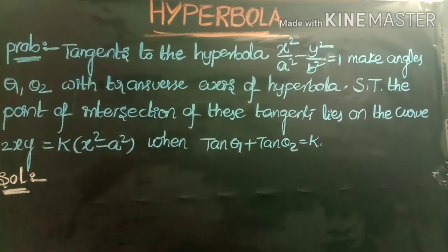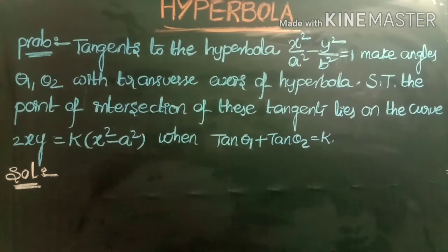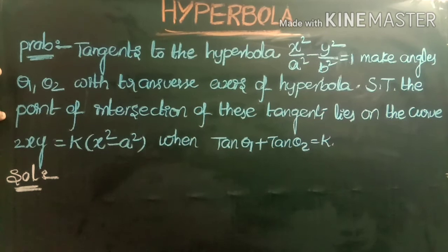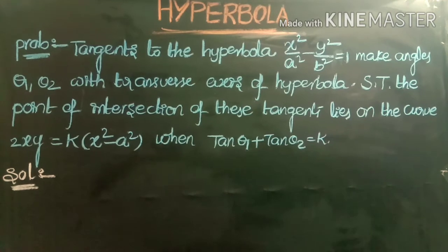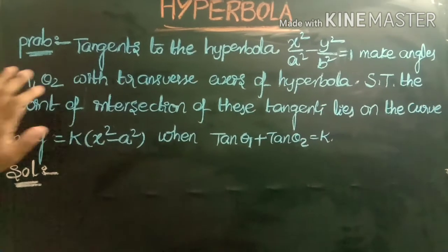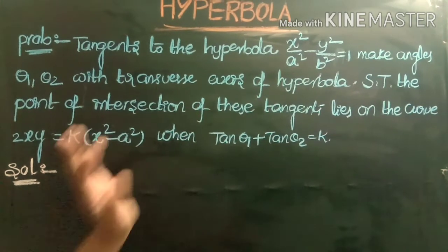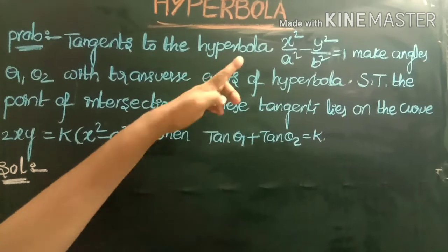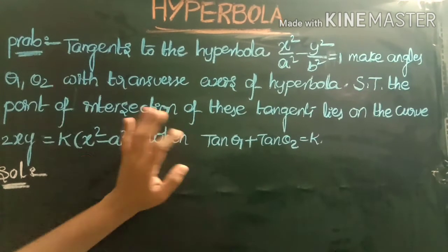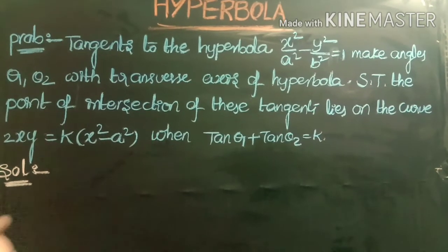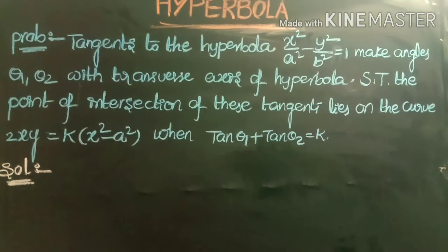Problem 2: Tangents to the hyperbola x²/a² - y²/b² = 1 make angles θ₁ and θ₂ with the transverse axis of the hyperbola. Show that the point of intersection of these tangents lies on the curve 2xy = k(x² - a²), when tan θ₁ + tan θ₂ = k. The transverse axis is the x-axis for this standard form of the hyperbola.